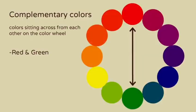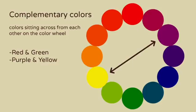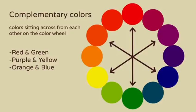Complementary colors sit across from each other on the color wheel. The most common pairs are red and green, purple and yellow, and orange and blue. Putting these next to each other creates great contrast and visual interest, but they can easily overpower each other, so it's important to use them carefully.